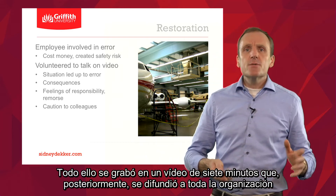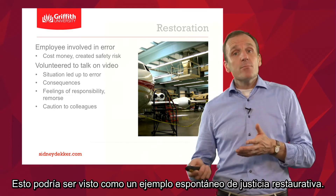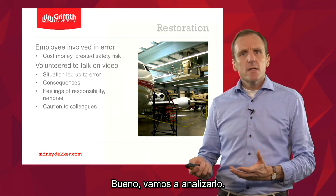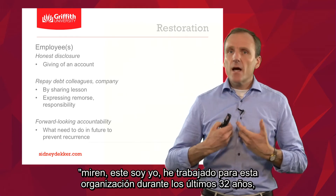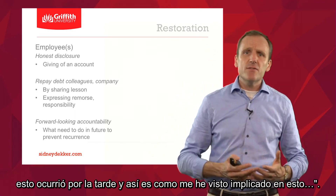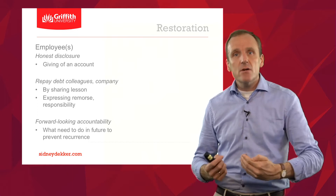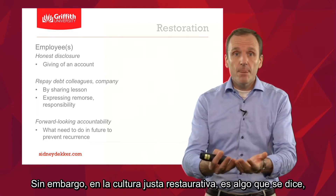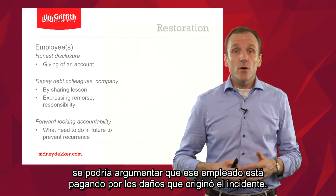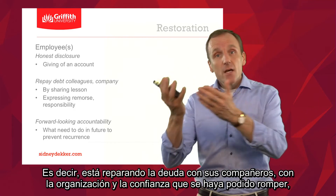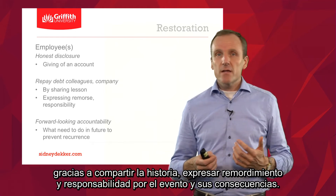All of this was put on a seven-minute video, which was then used throughout the organization to learn from the event. This could be seen as a spontaneous instance of restorative justice. In terms of the employee: he offered honest disclosure — this is who I am, I've worked for this organization for the last 32 years, and this is how I got involved. He gave his account. Remember that in retributive justice, an account is something you pay or settle. In restorative justice, it's something you tell. By telling it, by sharing that account and the lesson, the employee repaid a debt to his colleagues and his organization, restoring some of the trust that had been broken, and expressing remorse and responsibility for the event.